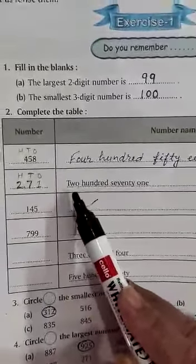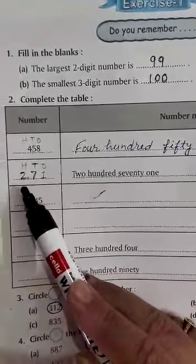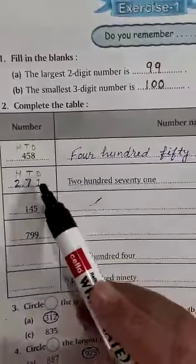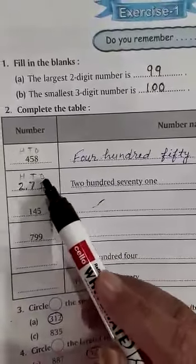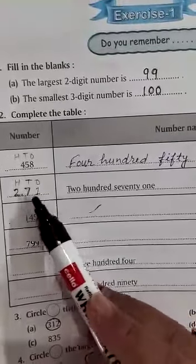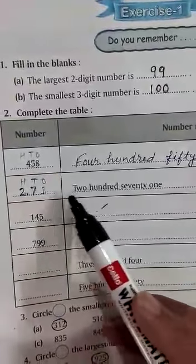Next, here is the number name given and you have to write in numbers: 271. First of all, we will write the symbols, 1s, 10s, 100. Now, on 100, below the 100 place, we will write 2.